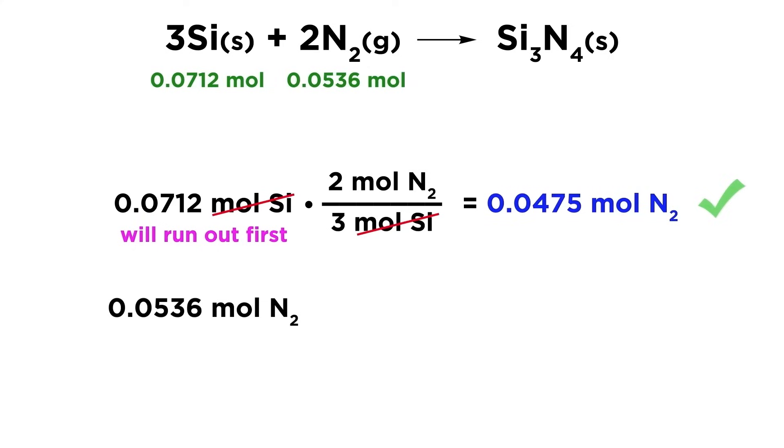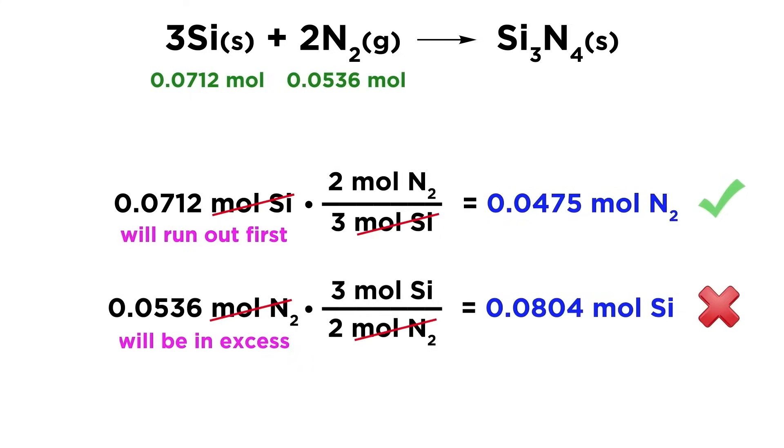To be thorough, let's do the same for nitrogen. Again we multiply by the stoichiometric ratio, being careful to put silicon on top and nitrogen on the bottom, and we get this many moles of silicon that would be required. As expected, we do not have enough, which means the silicon would run out before the nitrogen completely reacts, and again we conclude that it is the limiting reagent, while nitrogen is the reagent in excess.